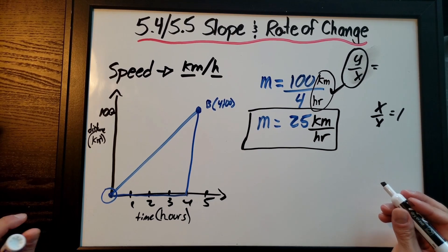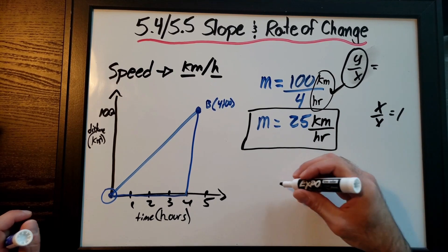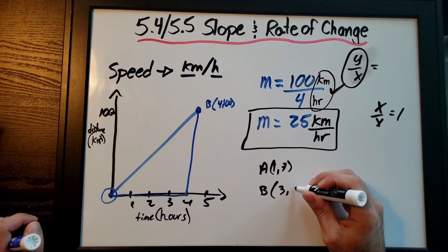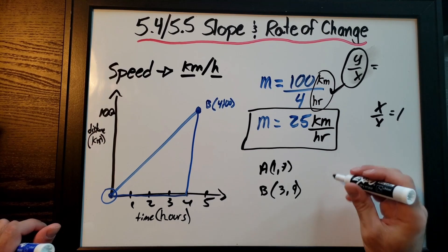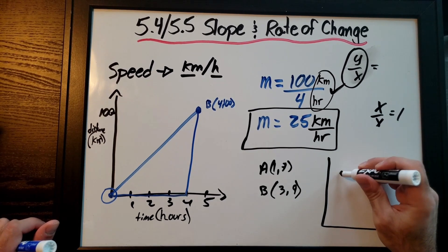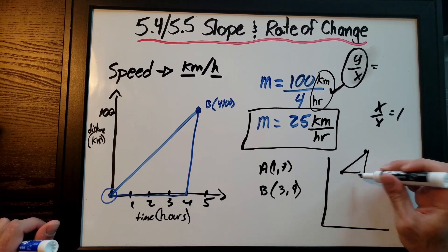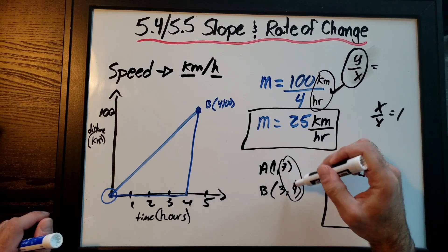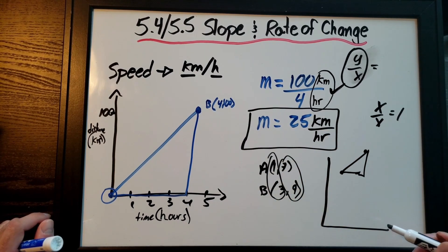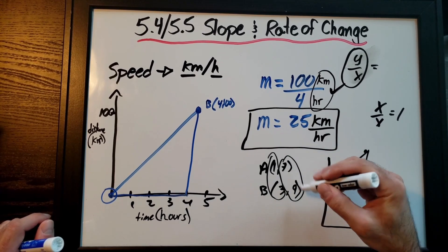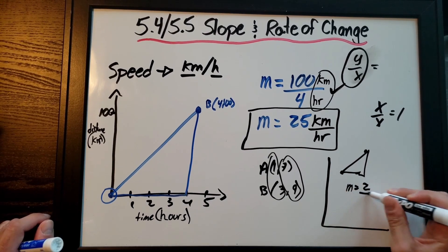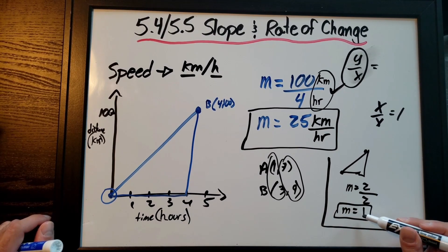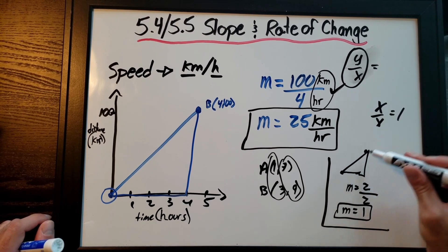If you're given a word problem with just two points — like A at (1, 7) and B at (3, 9) — I recommend graphing it first. Plot the points, connect them, draw a triangle, and find rise over run visually. If you do this repeatedly, you'll eventually realize you can just subtract: the difference in y-values is the rise, and the difference in x-values is the run.